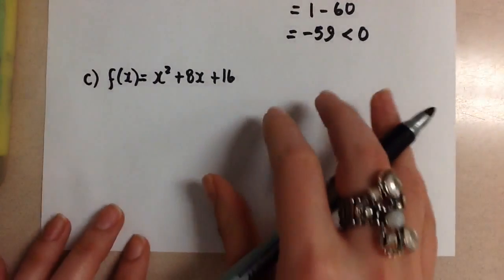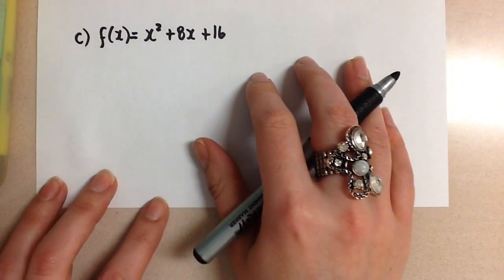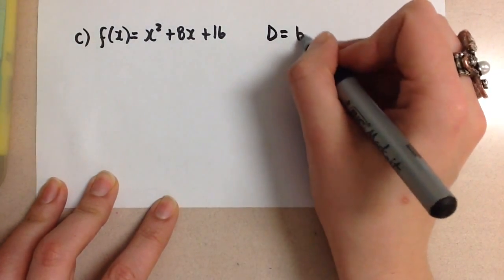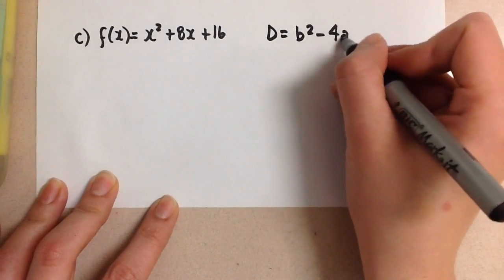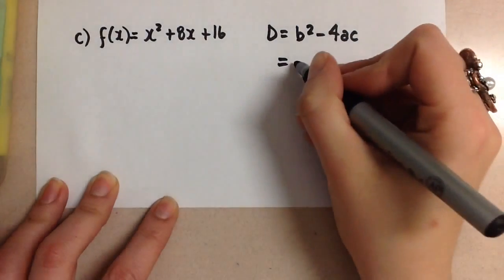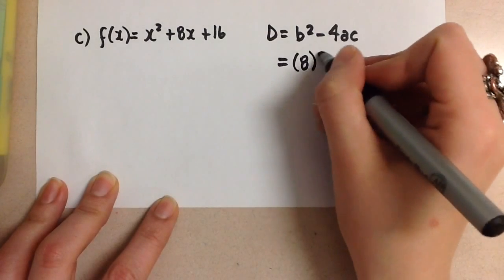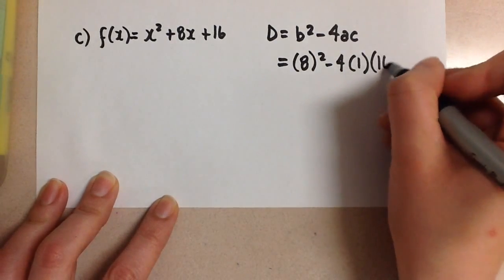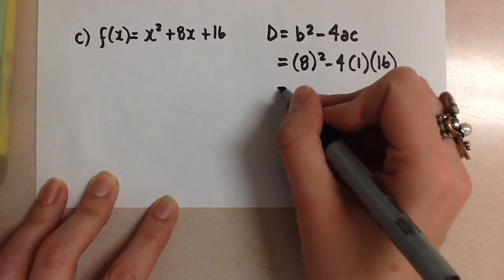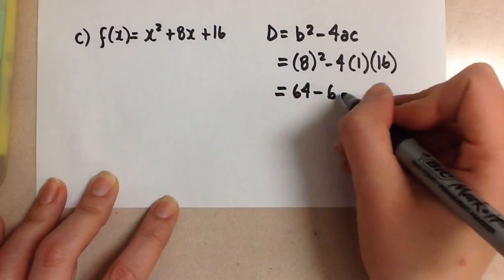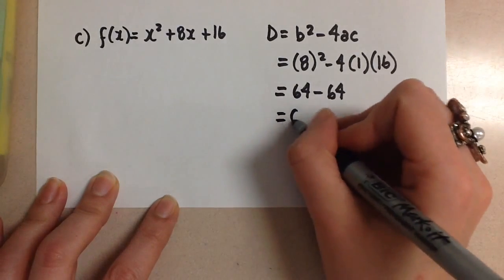Okay, lastly, we're going to do this one here. Again, the discriminant and sub in our values. So here we have 8 squared minus 4 times 1 times 16. And this is 64 minus 64, which is 0.